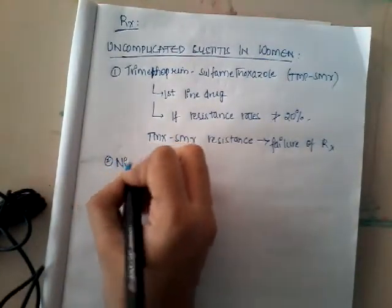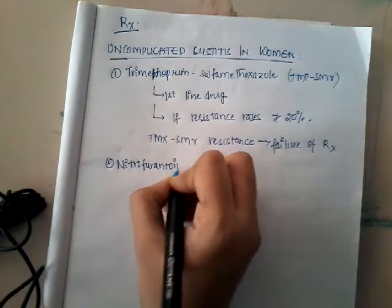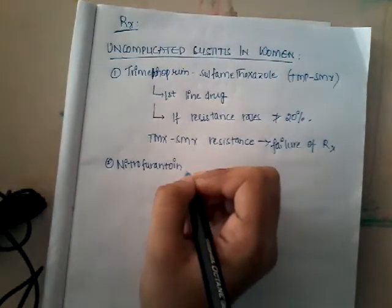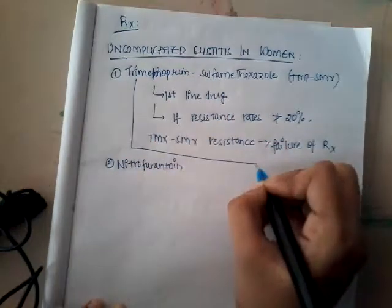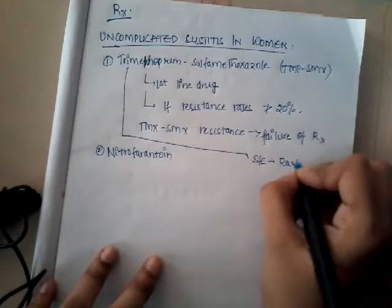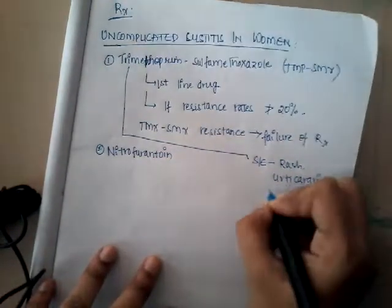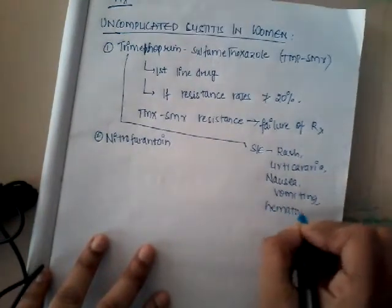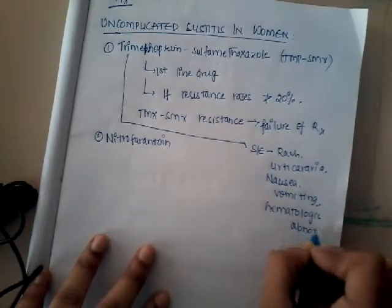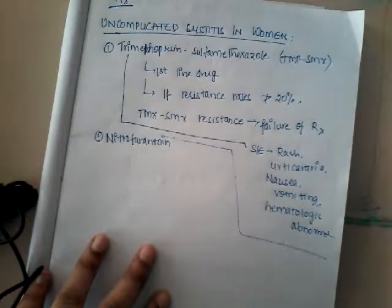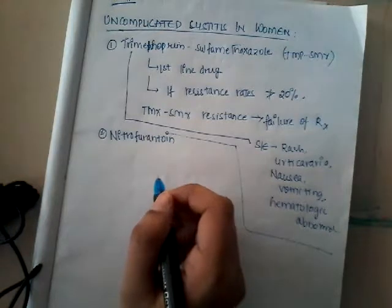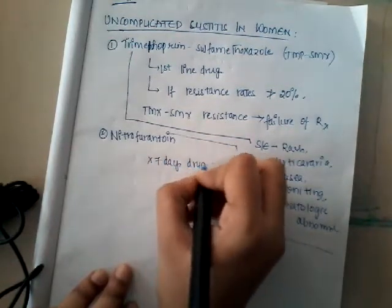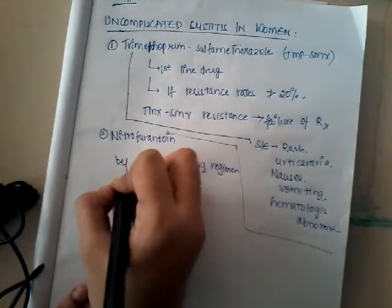There is one more drug — nitrofurantoin — which is a urinary tract protective agent and a good drug for urinary tract infections. The major side effects of trimethoprim-sulfamethoxazole include rash, urticaria, nausea, vomiting, and hematological abnormalities. Nitrofurantoin was traditionally prescribed as a seven-day regimen, but now we use a five-day course for acute cystitis.